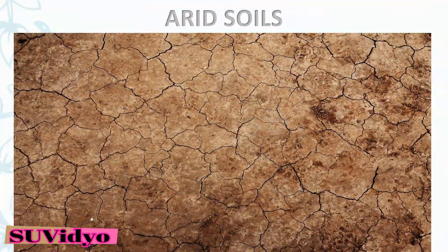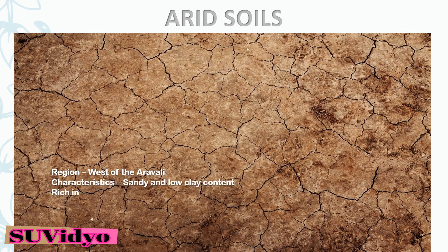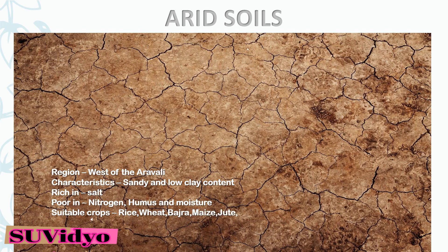Arid soils or dry soils are found to the west of the Aravalli mountains. They are sandy and low in clay content, rich in salt but poor in nitrogen, humus and moisture. After irrigation, the soil can be made suitable for the growth of rice, wheat, bajra, maize, jute, etc.